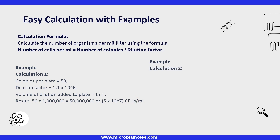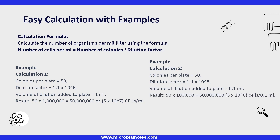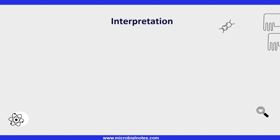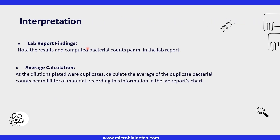In Example 2: 50 colonies on a plate, dilution factor 10 to the power 5, volume added is 0.1 ml — the result is 5 × 10⁶ cells per 0.1 ml. If we want the result in 1 ml, the answer is 5 × 10⁷ CFUs per ml. Document the determined bacterial counts per ml in the lab report based on the conducted experiments. For increased accuracy, compute the average of duplicate bacterial counts per ml from the plated dilutions.